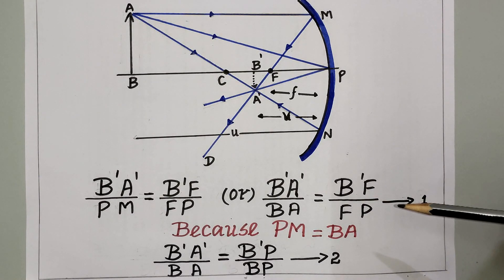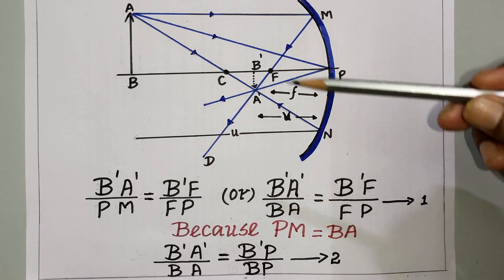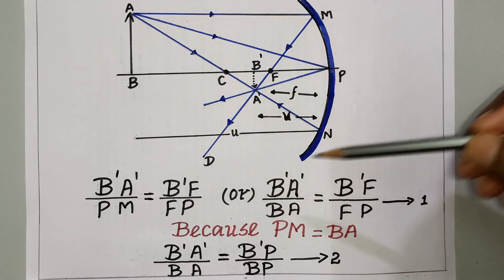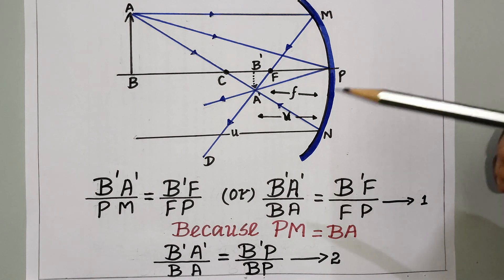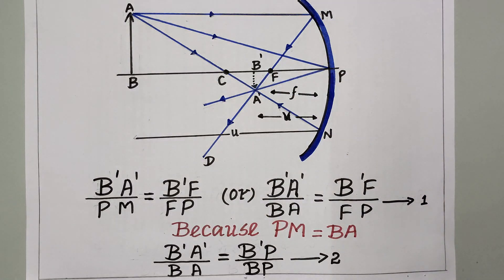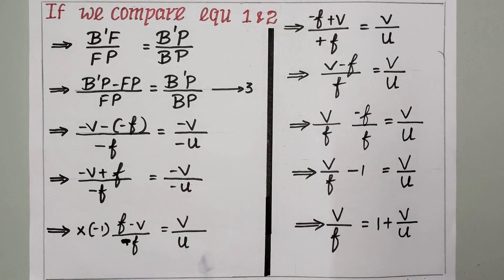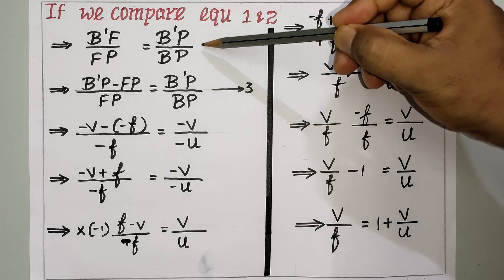Comparing equations 1 and 2, we note that B'P equals −v, FP equals −f, and BP equals −u, according to sign convention. All three distances get a negative sign because they are measured opposite to the direction of light. Since the left sides of both equations are equal, the right sides must also be equal.